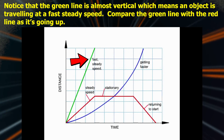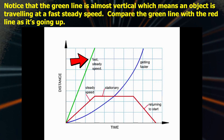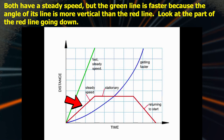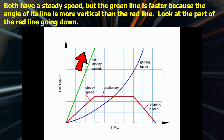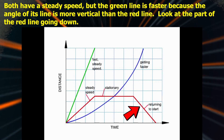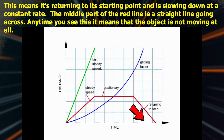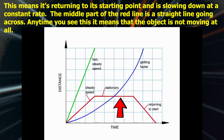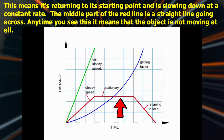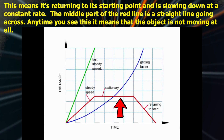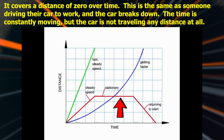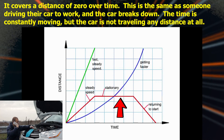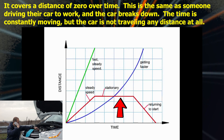Notice that the green line is almost vertical, which means an object is traveling at a fast steady speed. Compare the green line with the red line — both have a steady speed, but the green line is faster because the angle of its line is more vertical. Look at the part of the red line going down — this means it's returning to its starting point and slowing down at a constant rate. The middle part of the red line is a straight line going across, which means the object is not moving at all. It covers a distance of zero over time — the same as someone driving to work and their car breaks down. Time keeps moving, but the car is not traveling any distance.